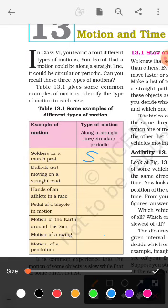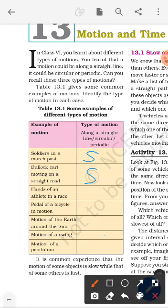Bullock cart moving on a straight road. It is also a straight line motion. Hands of an athlete in a race. When an athlete runs, his hands move to and fro. So you can say it is a periodic motion.